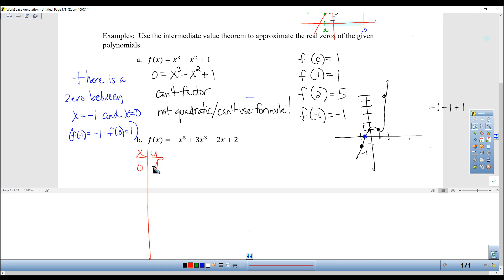When x is 0, I get 2. When x is 1, I get negative 1 plus 3 minus 2 plus 2 is, how this happened last time, 2 again. At 2, I get negative 32 plus 24 minus 4 plus 2.